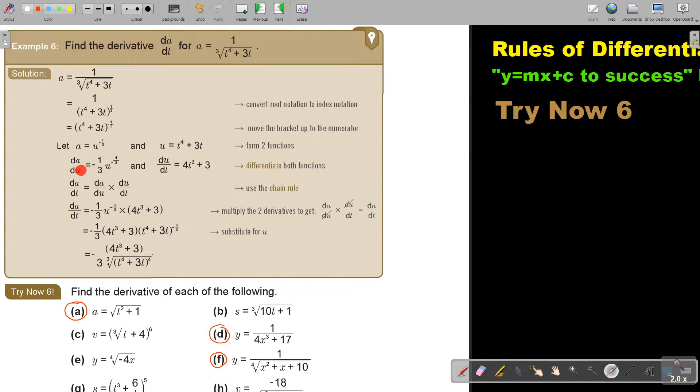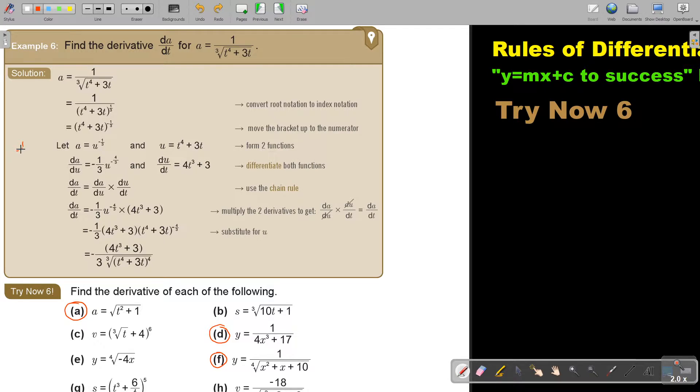Your first one will be A equals U to the power of negative a third. Now differentiate this one. So negative a third U, this will be negative 4 over 3. This one dU over dT is going to be 4T to the power of 3 plus 3.